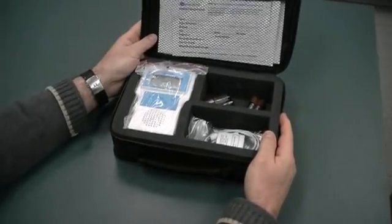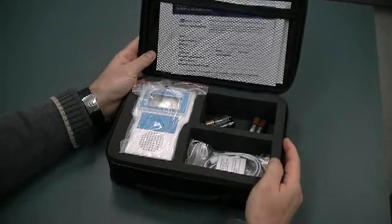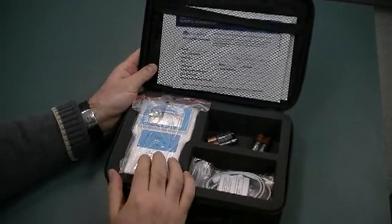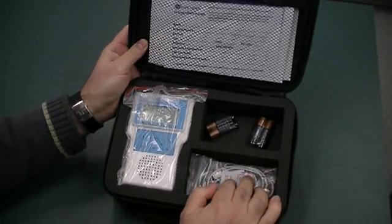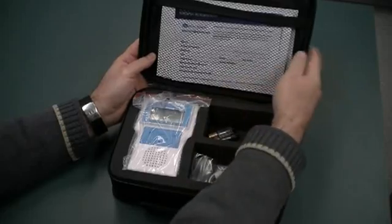Okay, so what we have is a MileGuide unit, some batteries, place for the cables, and there's some literature in here.